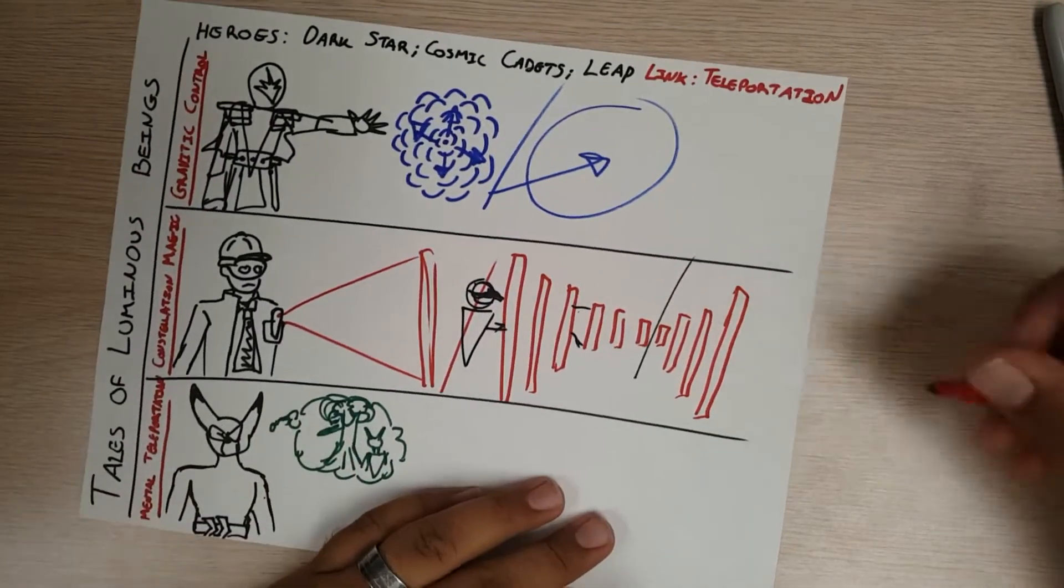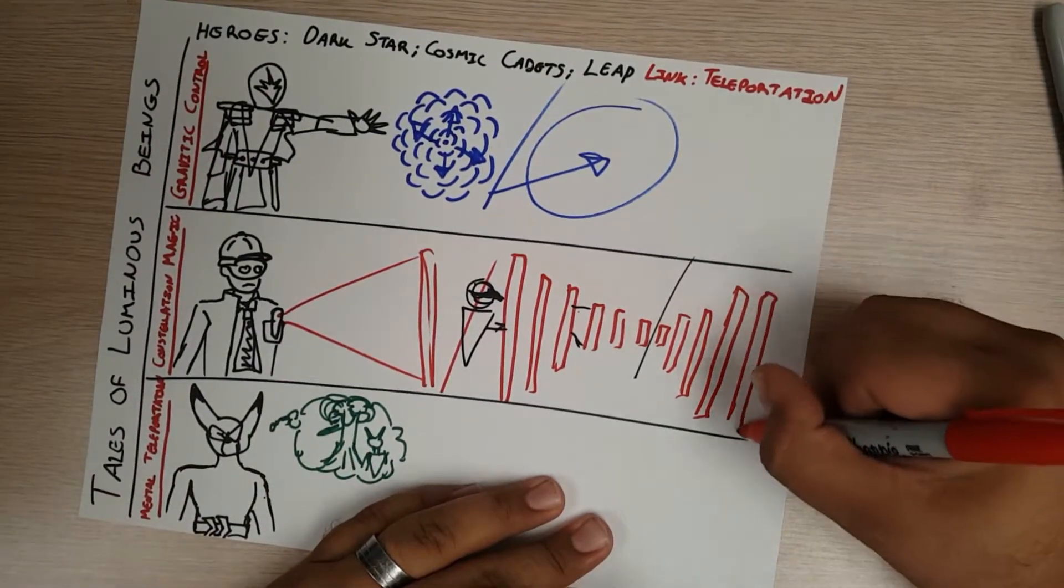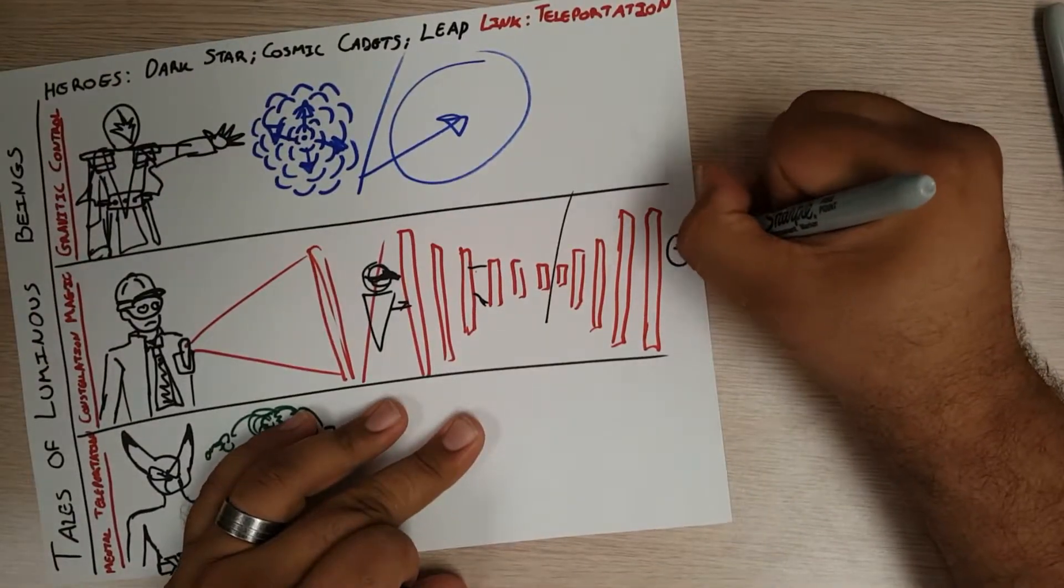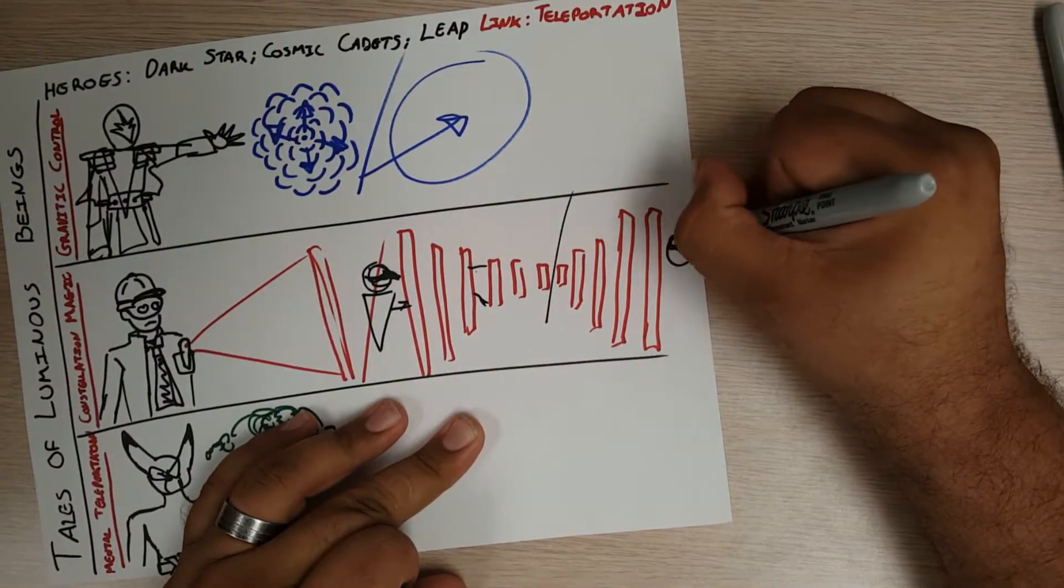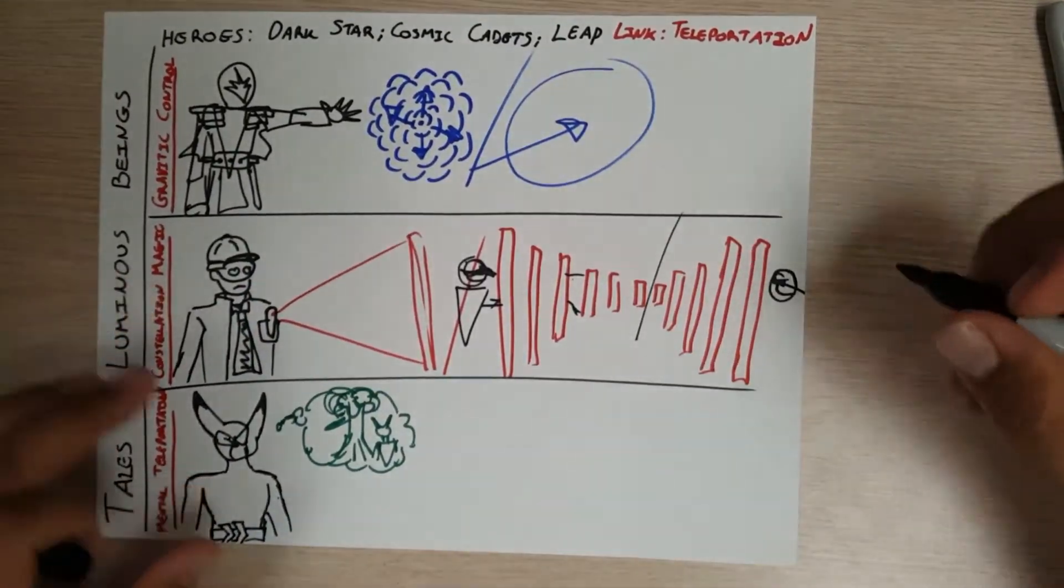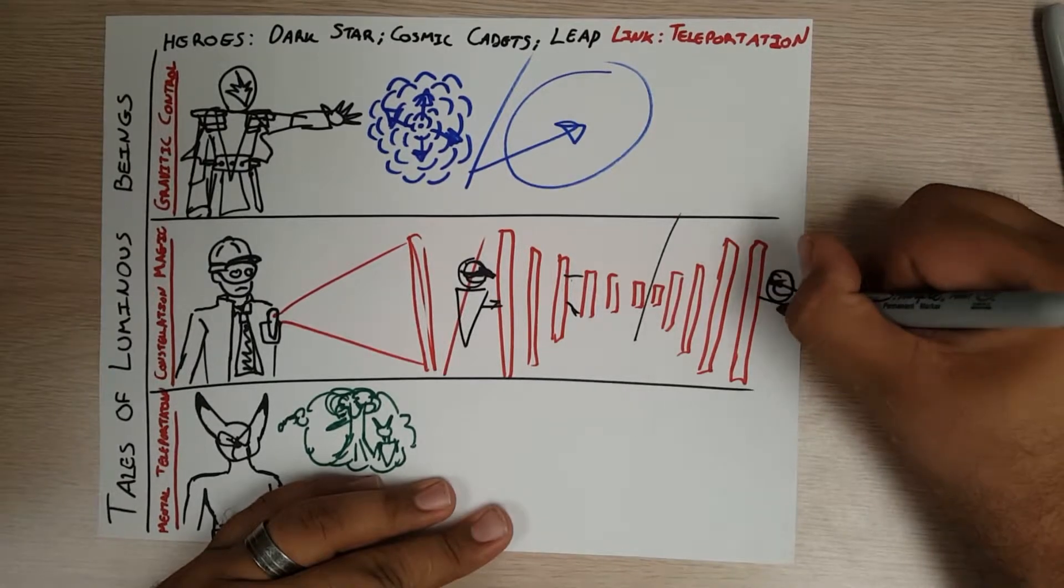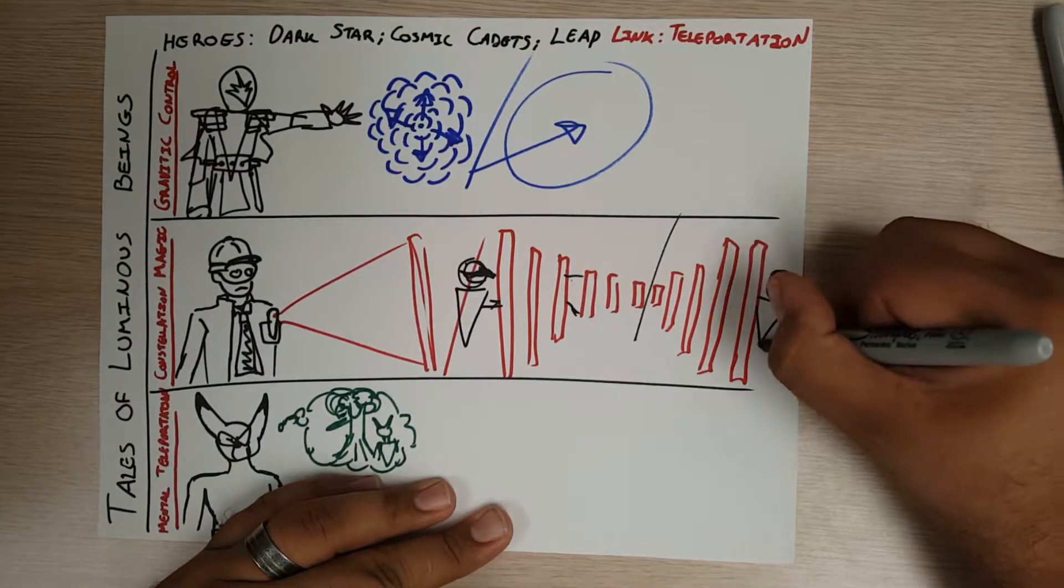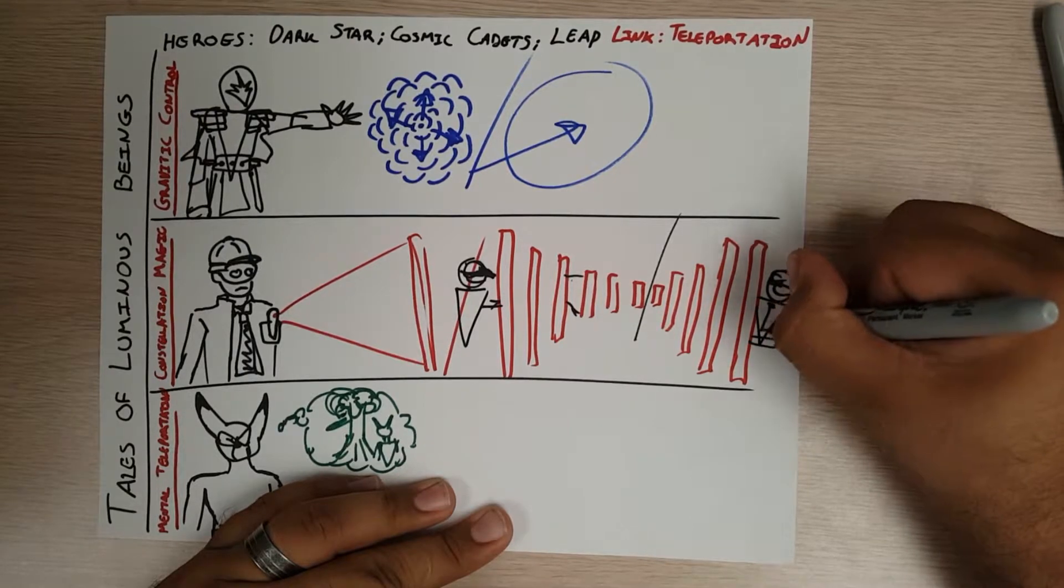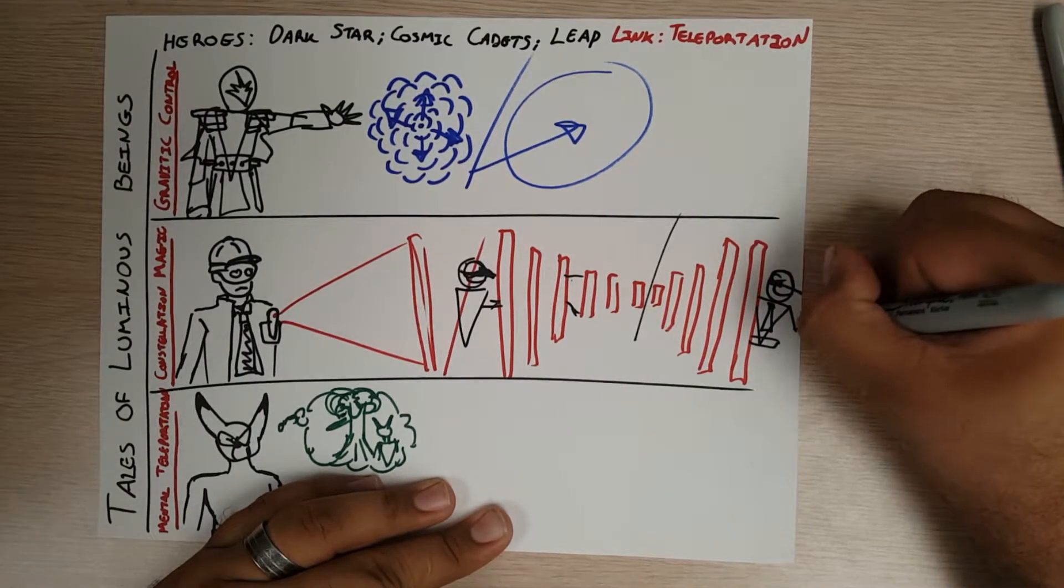This seemed like a really fun idea to me - that their pen lights have all these different functionalities and part of it would be to enable them to teleport. The Cosmic Cadets are nine years old and I don't know how else they're supposed to get from place to place to do their super heroics and save people and have their adventures.